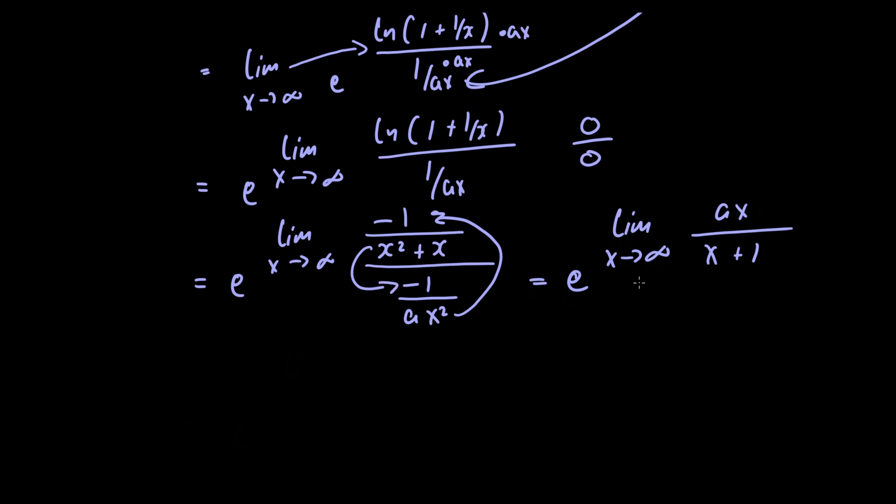In order to simplify this limit further what we're going to do is divide through by the highest power of x. So we have e raised to the limit as x approaches infinity. So a times x divided by x is just a and x plus 1 divided by x is just 1 plus 1 over x.